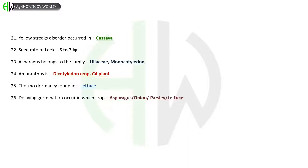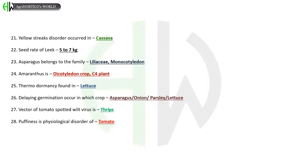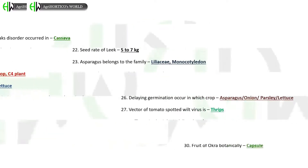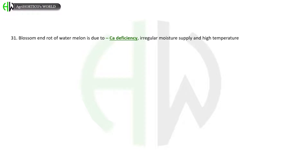Vector of tomato spotted wilt virus is thrips. Puffiness is a physiological disorder of tomato. Cat face is also a physiological disorder of tomato. Fruit of okra botanically is a capsule. Blossom end rot of watermelon is due to calcium deficiency, irregular moisture supply, and high temperature.